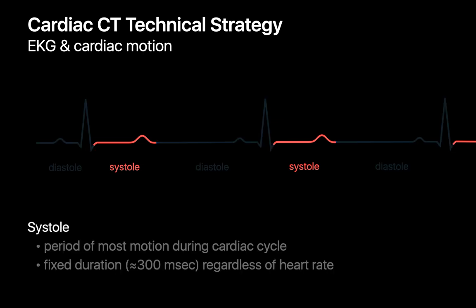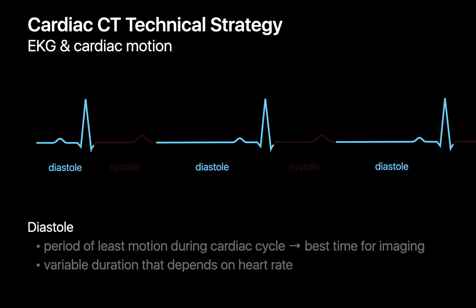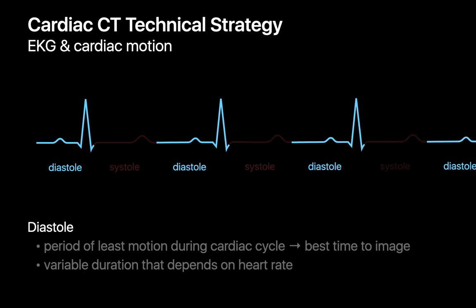The parts of our CT scan acquisition that occur during systole are when cardiac motion is the worst. On the positive side, the duration of systole is relatively fixed and predictable, regardless of how quickly or slowly a patient's heart rate is. The parts of our CT scan acquisition that occur during diastole are when the heart is relatively still and the best time to visualize the heart. On the negative side, the duration of diastole, unlike systole, is variable and changes as the patient's heart rate changes. Notice how at a faster heart rate the systolic durations remain relatively fixed, but the diastolic durations change.